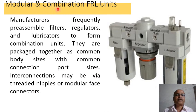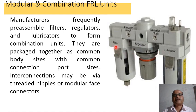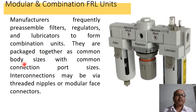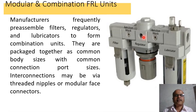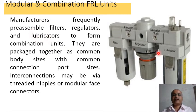Modular and combination FRL units: Today's manufacturers combine three elements — filter, regulator, and lubricator — into an FRL unit. Manufacturers frequently pre-assemble filters, regulators, and lubricators to form a combination unit. They are packaged together as common body sizes with common connection port sizes. Interconnection may be via threaded nipples or modular face connectors. This is a modern FRL unit as shown in the diagram.